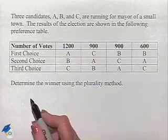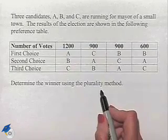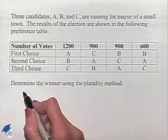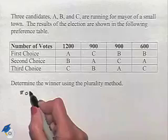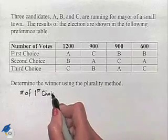We want to determine the winner using the plurality method. The plurality method means we're only going to look at the number of first choice votes. So we're going to determine the number of first choice votes for each of the three candidates.